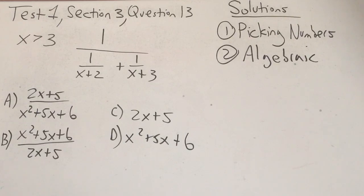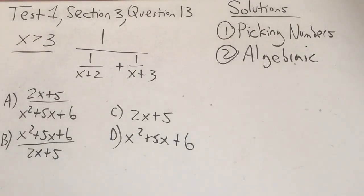Now keep in mind that this is a no-calculator problem, so even when we pick numbers, we're going to have to do all the computations by hand. The question: we're given that x is greater than 3, and we want to know which of the following choices is equivalent to this expression: 1 over (1 over x+2 plus 1 over x+3). That's a complex fraction.